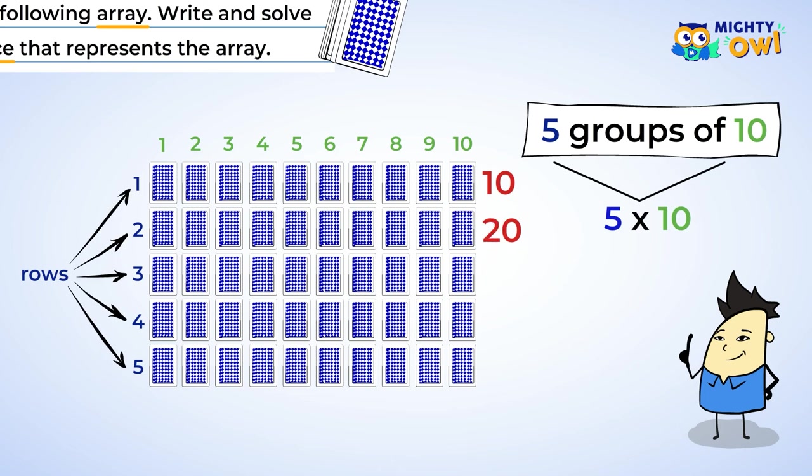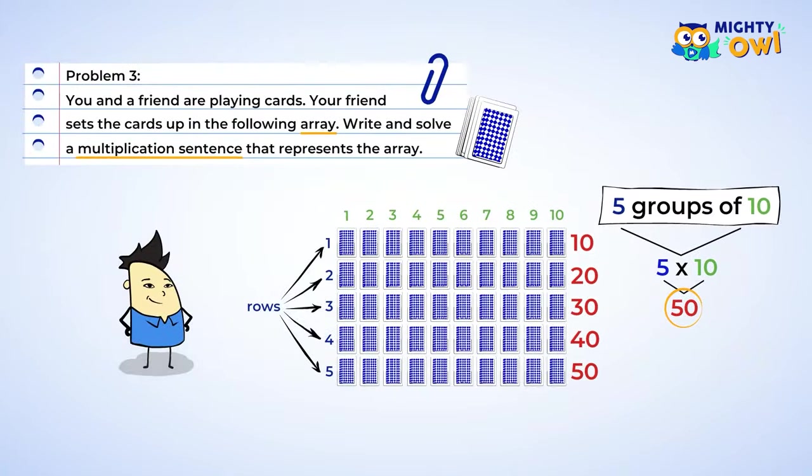Five multiplied by ten. Perfect! Ten, twenty, thirty, forty, fifty. There are fifty cards. Great job!